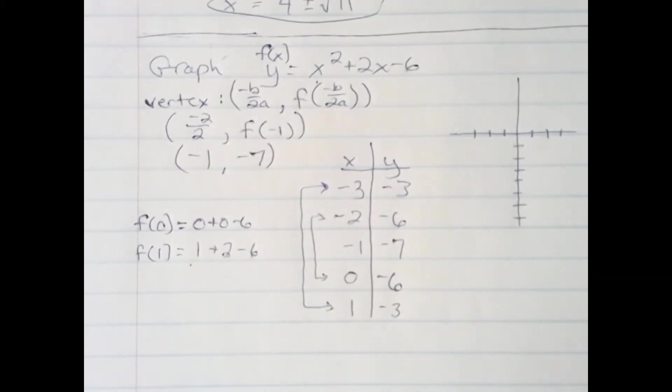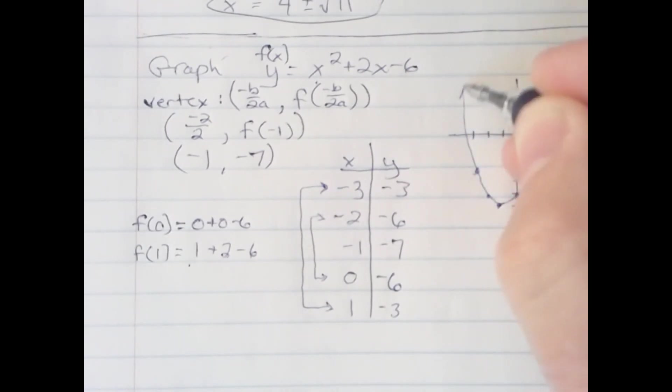I now have five coordinates from which to plot the graph and get an idea of what the graph looks like. Let's first do negative 1, negative 7, right here. Then we'll plot 0, negative 6. And we'll also plot 1, negative 3. And because of symmetry, I know I can do negative 2, negative 6, and negative 3, negative 3. And therefore, my graph will look like that.